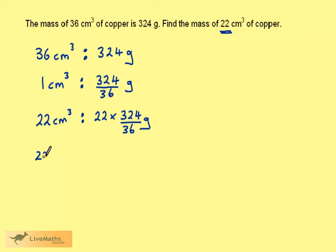So 22 cm³ will be equivalent to, and calculating the right-hand side, gives me 198 g.